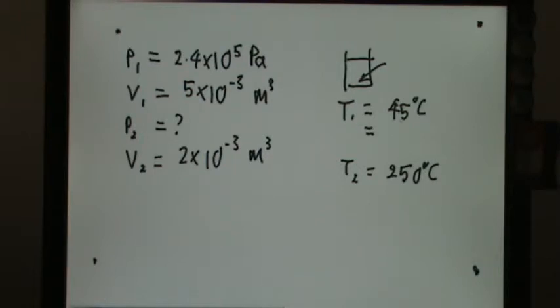So make sure you do some conversion. 45 plus 273 is 318 Kelvin. 250 plus 273 is 523 Kelvin.